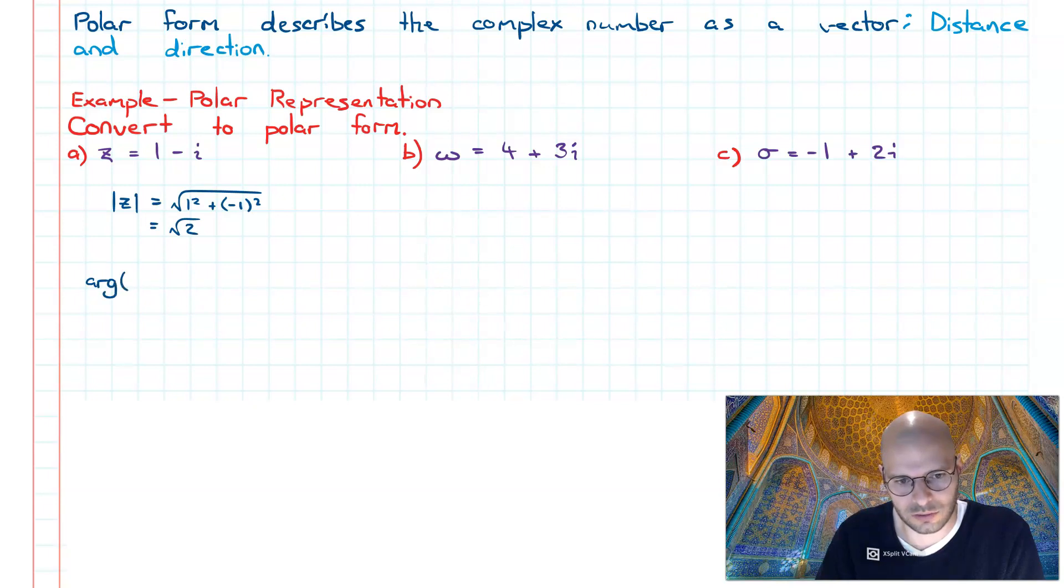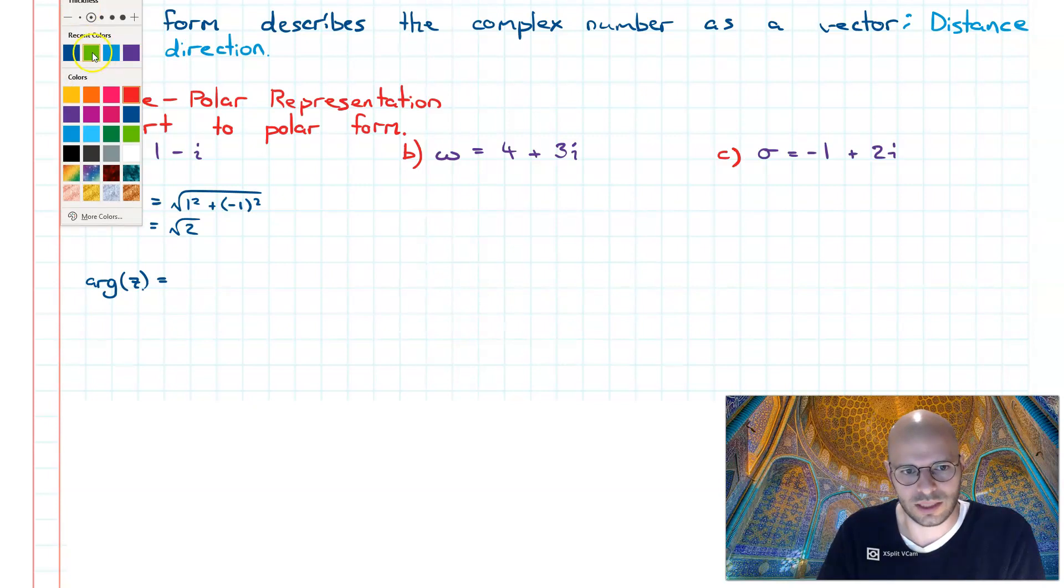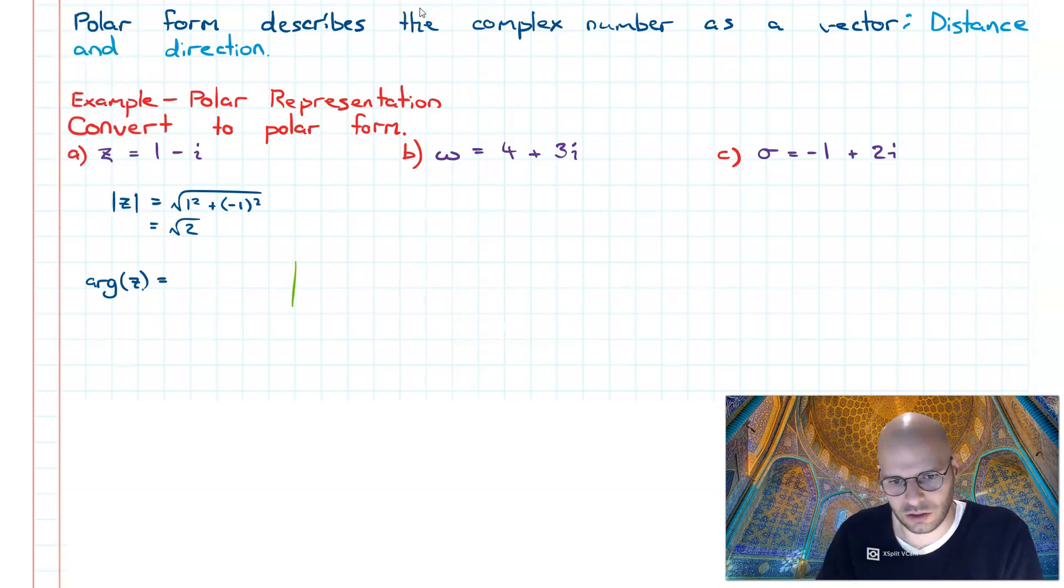Next we want to do the argument. The argument of this is going to be such that when we imagine our Argand diagram, because we've got a positive real and a negative imaginary, we're going to be pointing downward like this.